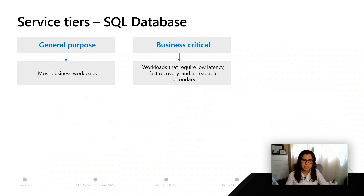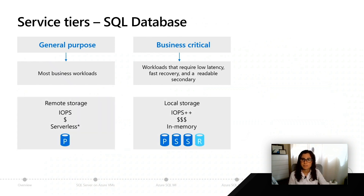Two of them we're familiar with are the same from managed instance — that's the general purpose and the business critical tier — and the same sort of recommendation and guidance is going to go along here. Most of our customers are going to be just fine on general purpose.